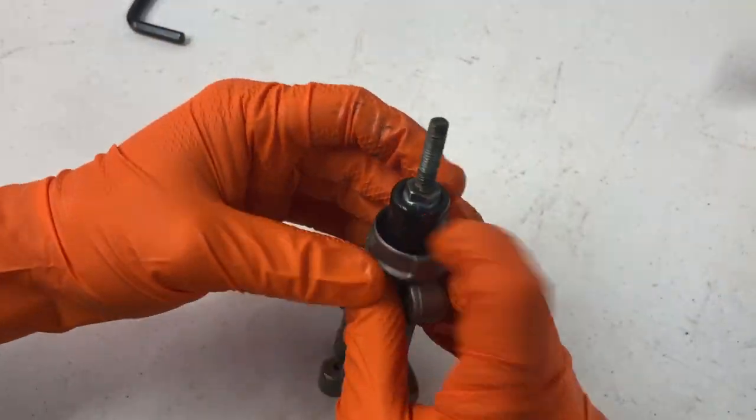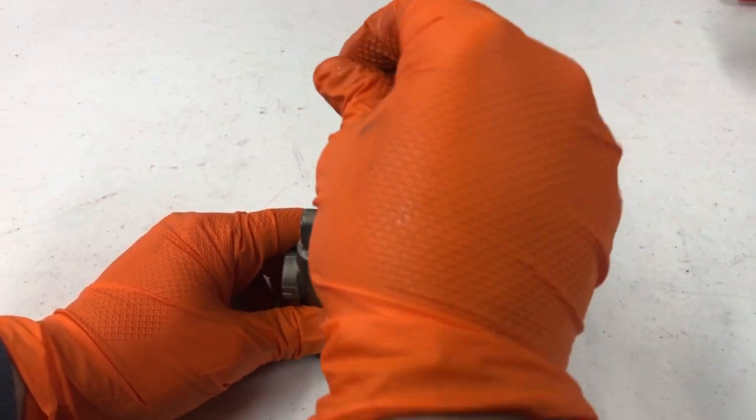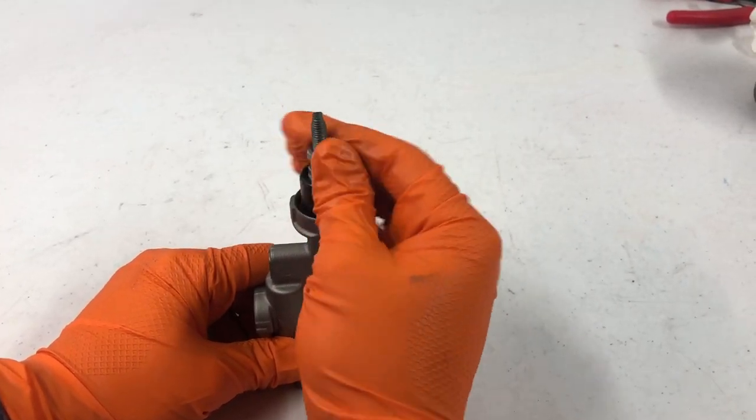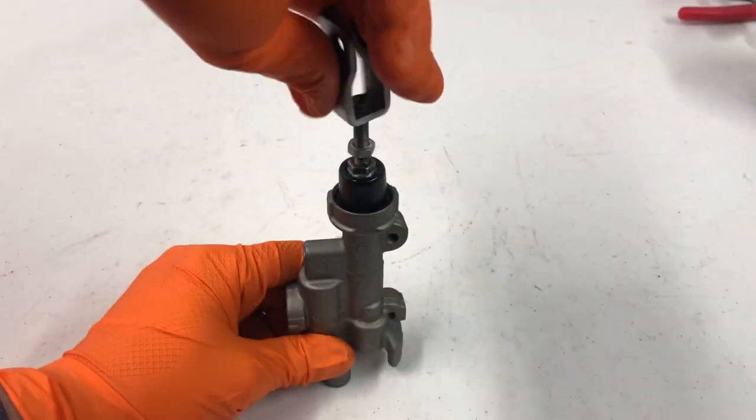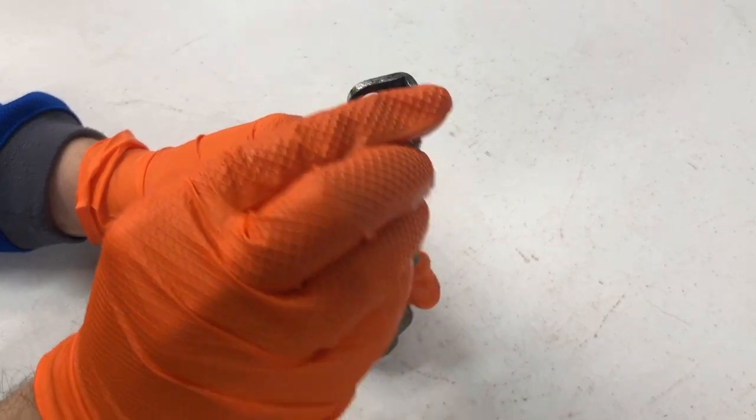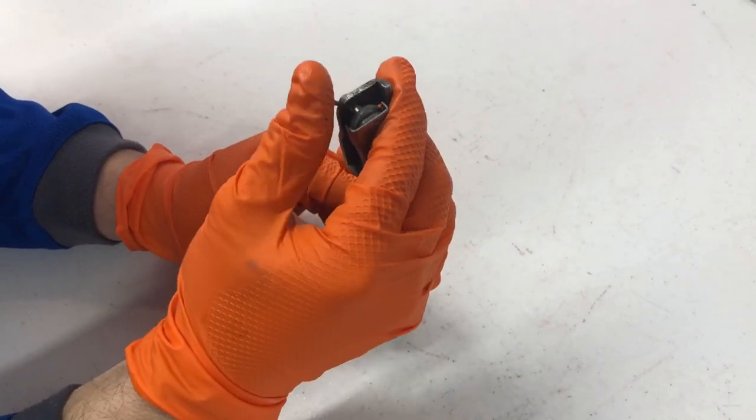And now we can slide this dust seal over the top of this nut here and get it locked into place to protect our piston from debris. Then we'll thread our nut onto here and then tighten down our connecting bracket here that'll connect the master cylinder to your rear brake pedal. And then this piece I'll just slide through and put the clip in for now, but I'll have to remove this when I go to install it onto the bike.